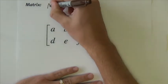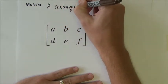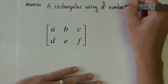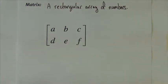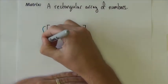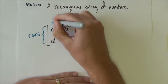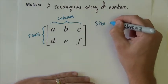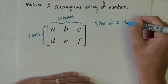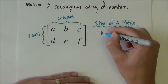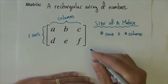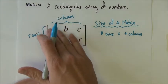A matrix is defined as a rectangular array of numbers. The numbers within the matrix are placed inside square brackets. They are made up of rows and columns — rows go horizontally, columns go vertically. The size of a matrix is always described as the number of rows by its number of columns, so this one would be a 2 by 3, as it has 2 rows and 3 columns.